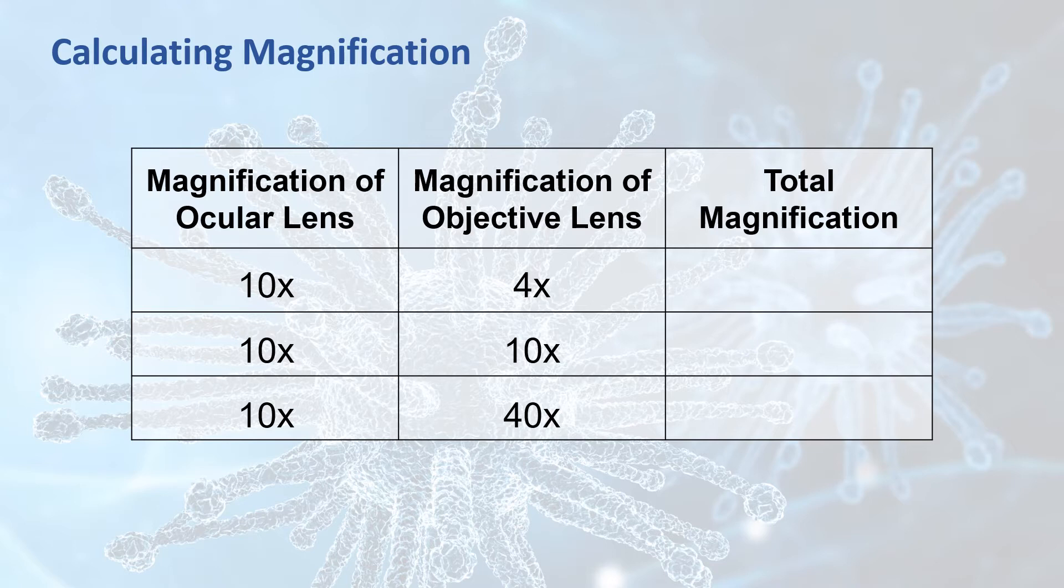So now, to calculate the total magnification, you just need to do a bit of simple multiplication. When using the lowest power objective lens, the total magnification is the magnification of the ocular lens, which is 10 times, multiplied by the magnification of the objective lens, which is 4 times. So, the total magnification is 40 times. In other words, the specimen looks 40 times bigger than it actually is. Following the same pattern, when you use the medium power objective lens, the total magnification is 10 times 10, for a total magnification of 100 times. This means that the specimen looks 100 times bigger than it is in real life.